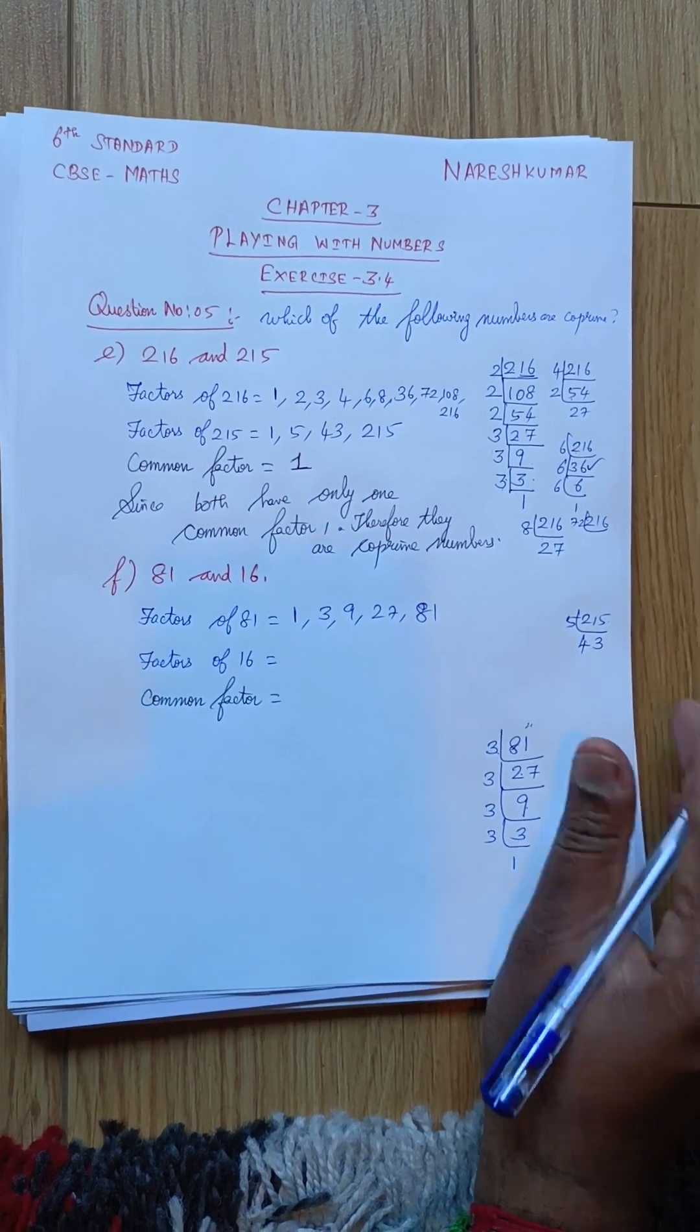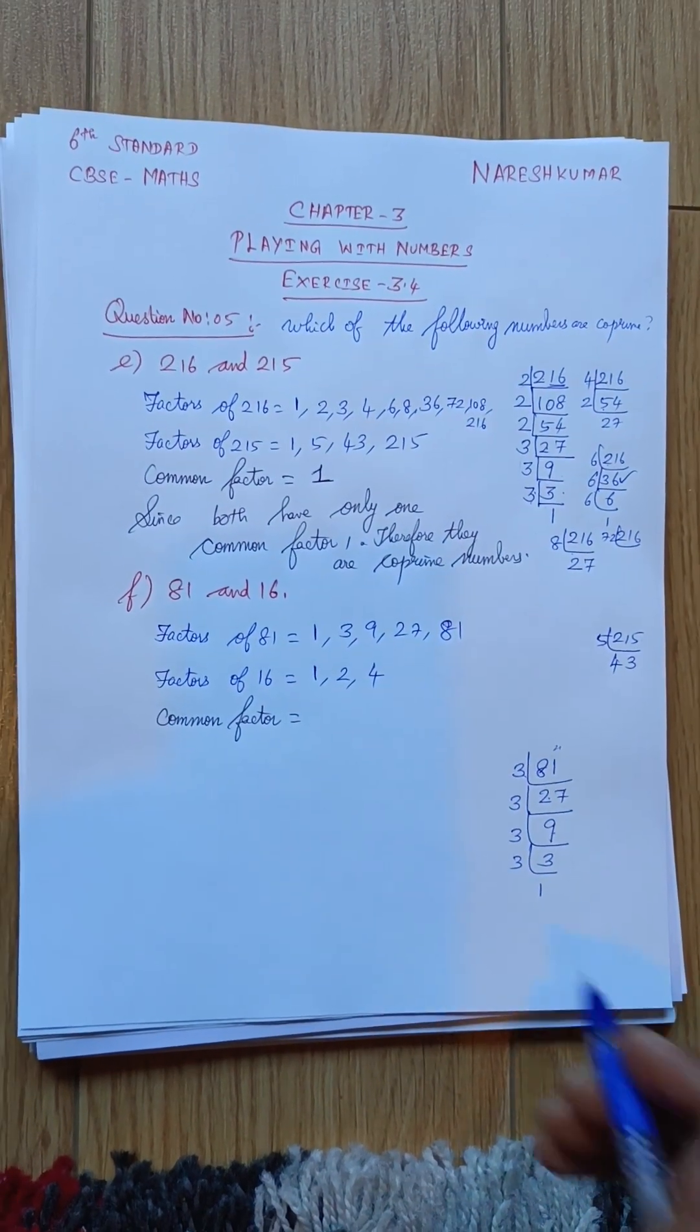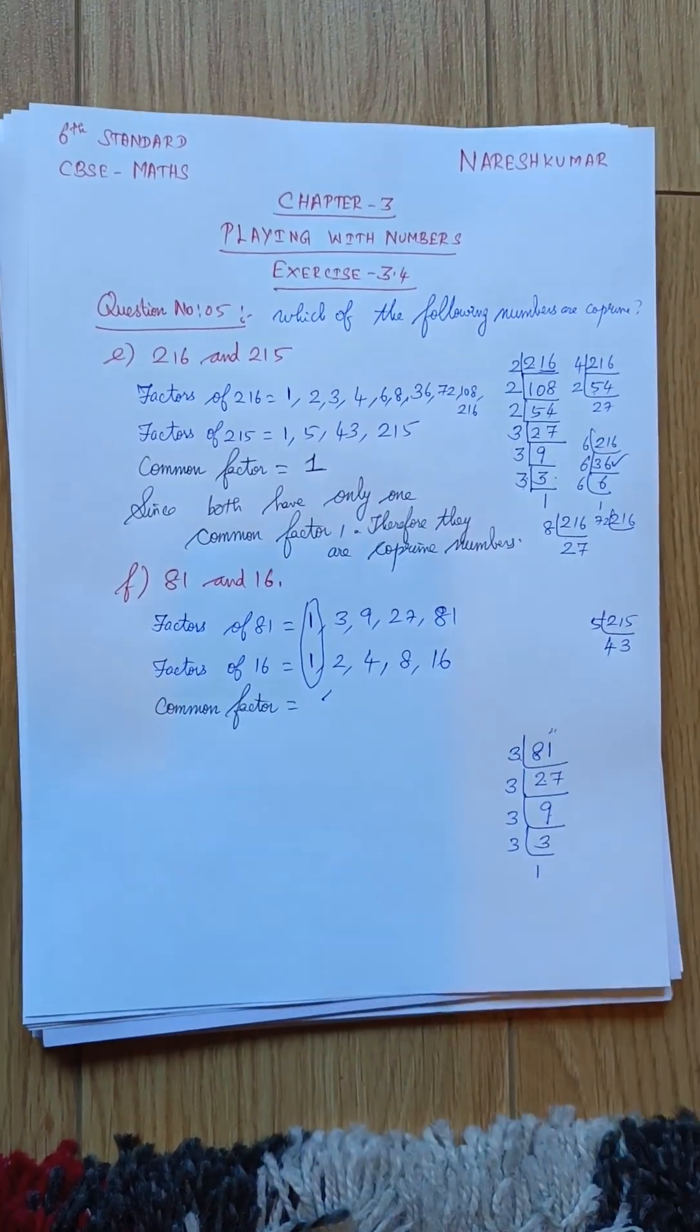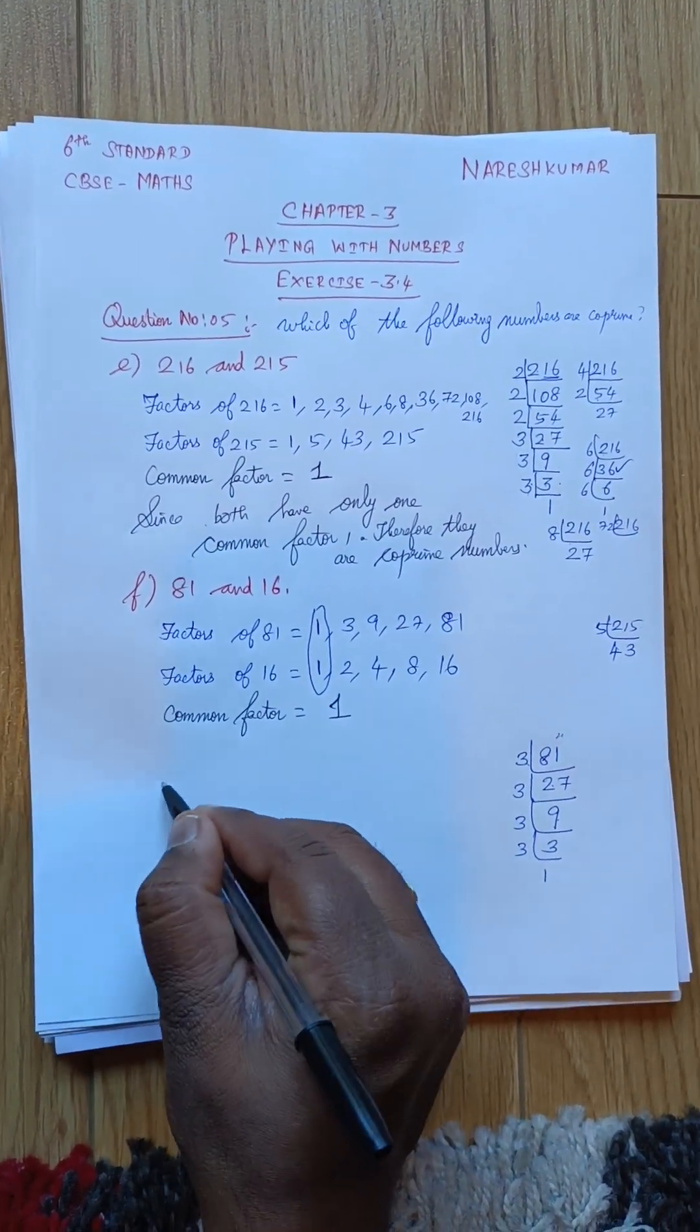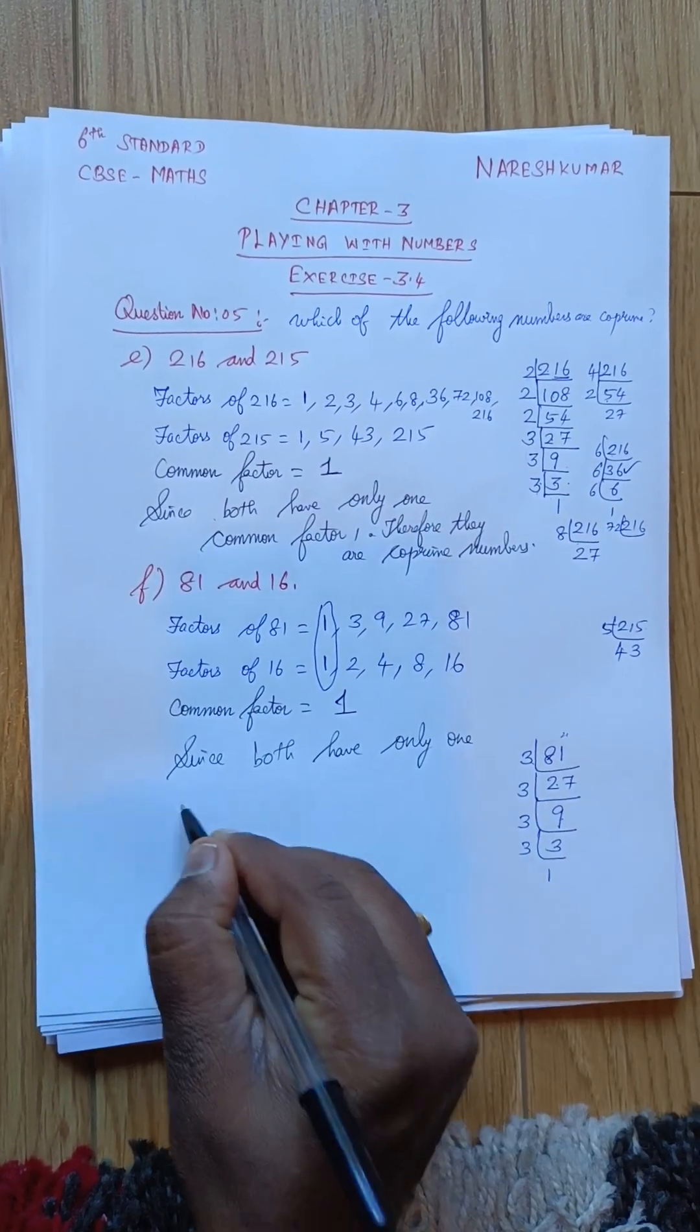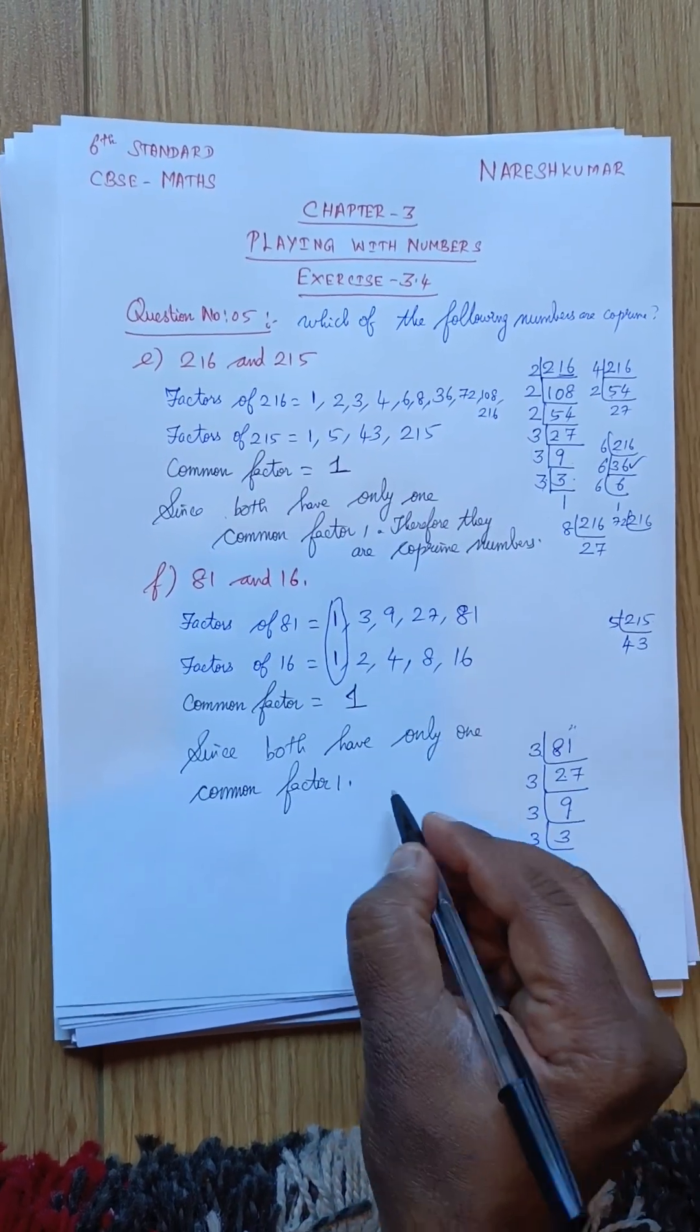Then next, for 16, what are the numbers it will come? 1 will come, 2 will come, 4 will come, then 8 will come, 16 will come. So what is the common? 1 is the common number. So the same statement we need to write it. Since both have only one common factor 1, so therefore, they are co-prime numbers.